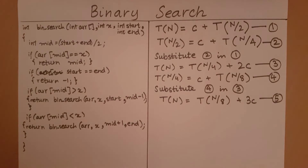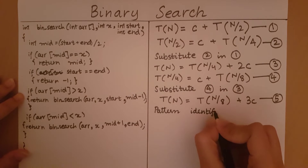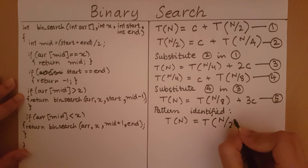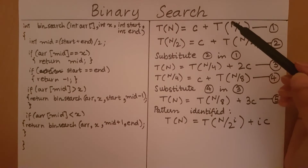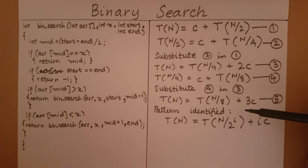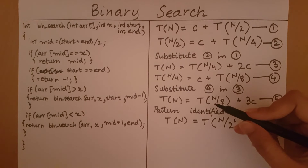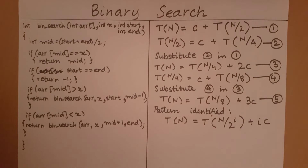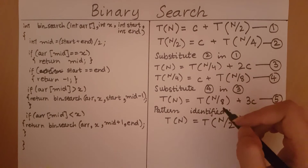There is a pattern forming. The general pattern identified is: T(n) = T(n / 2^i) + i·c. We can verify this: in equation 1 we have T(n / 2^1) + 1·c, and in equation 3 we have T(n / 2^2) + 2·c. This pattern continues to hold. The term T(n / 2^i) is a diminishing term — first n/2, then n/4, then n/8, then n/16 — and so on.